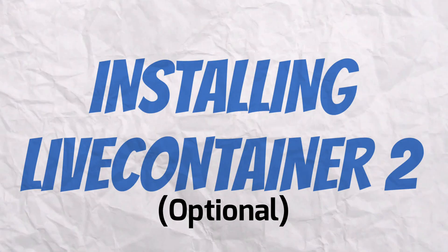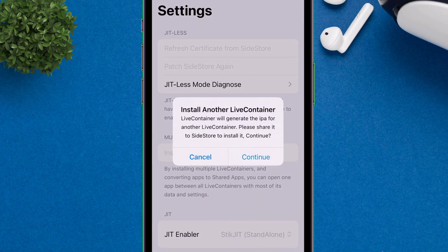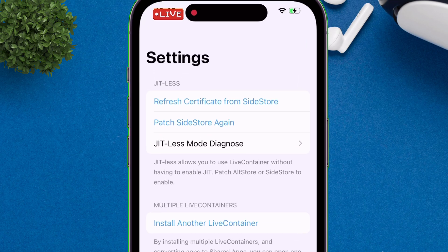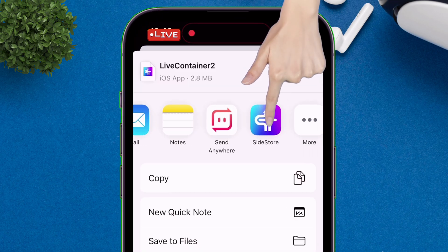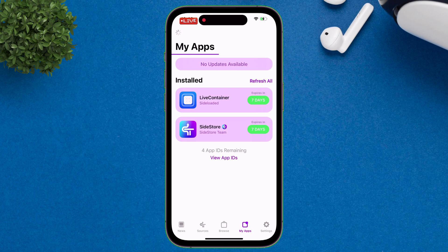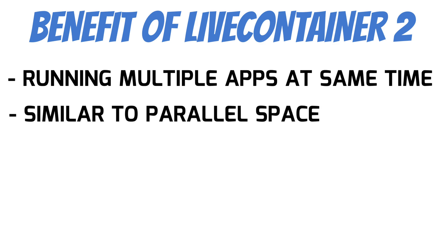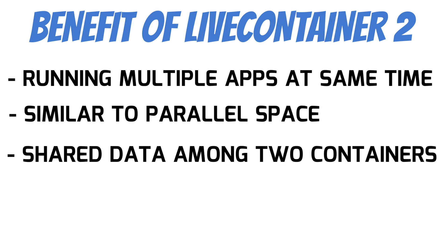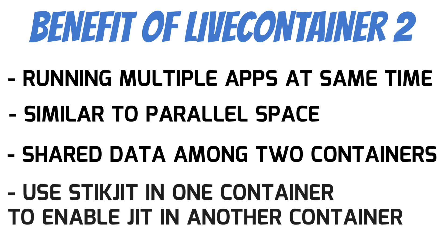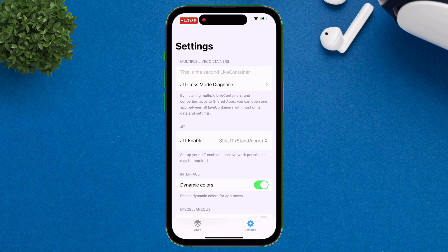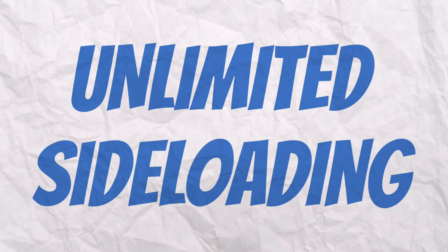Next, you may also install Live Container 2 by tapping on Install Another Live Container and then choosing Side Store from the Share option as shown. Although installing the second Live Container is totally optional, I would suggest that you do sideload it, as it offers running multiple app instances simultaneously. Very similar to Parallel Space on Android, it allows you to share data between two Live Containers, and also allows you to use StickJIT or other JIT tools in one Live Container to enable JIT in another Live Container.